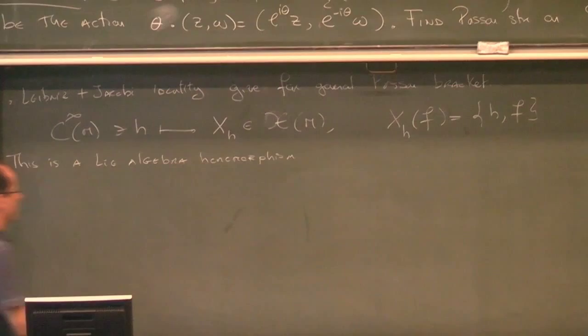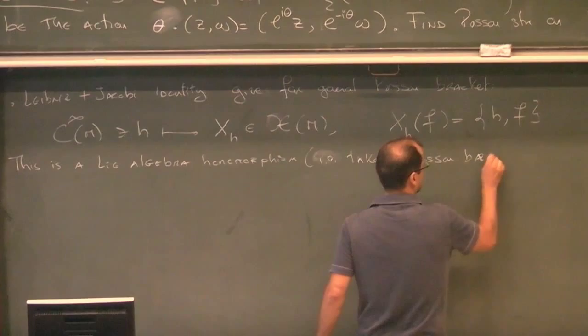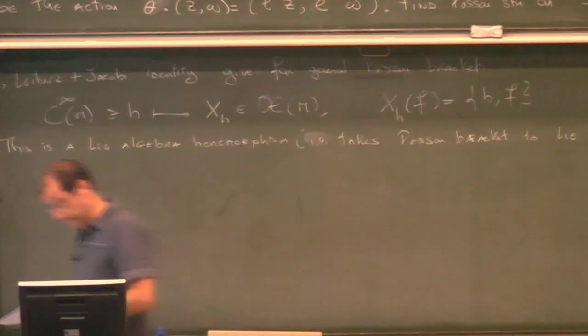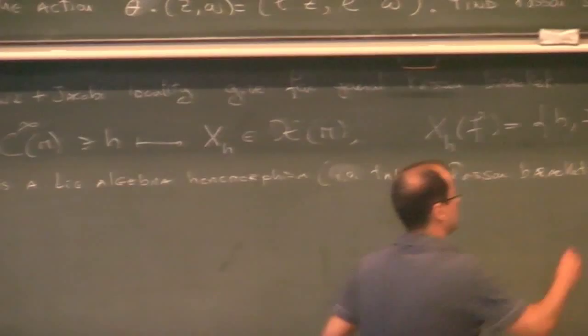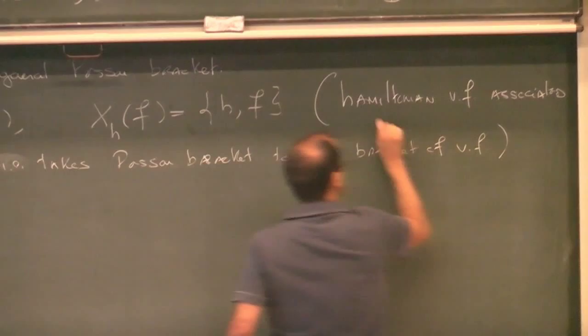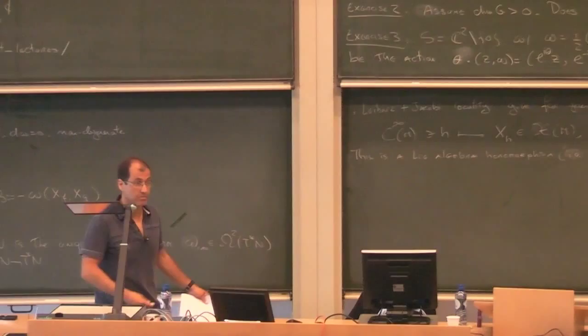By Leibniz, this is a derivation, so it's a vector field. By Jacobi, this map is actually a Lie algebra homomorphism — it takes the Poisson bracket to the ordinary Lie bracket of vector fields. My conventions are such that this is a Lie algebra homomorphism, not an anti-homomorphism — there is no minus sign. The study of the dynamics of these vector fields is called Hamiltonian dynamics, which is an important branch of dynamics.